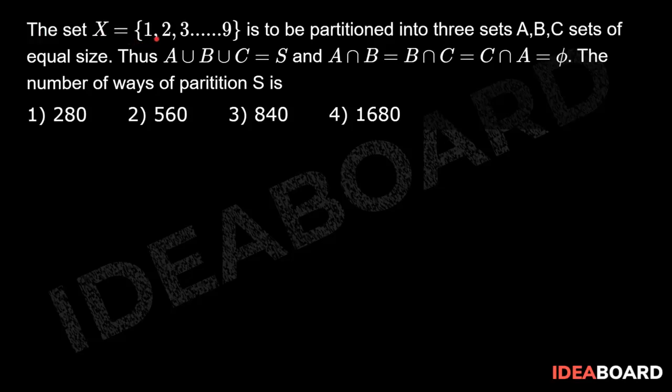The set X = {1, 2, 3, ..., 9} is to be partitioned into three sets A, B, C of equal sizes. Thus A ∪ B ∪ C = S and A ∩ B = B ∩ C = C ∩ A = φ, the empty set.